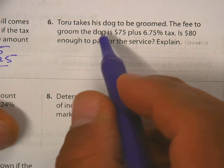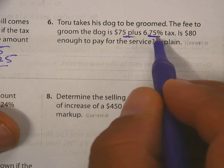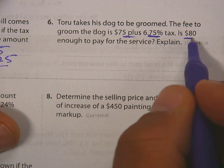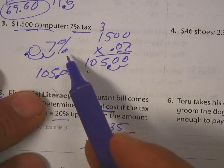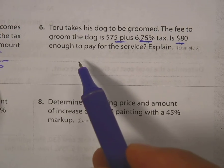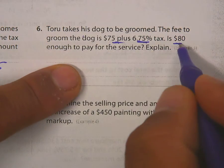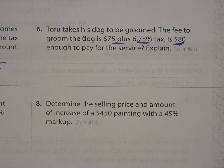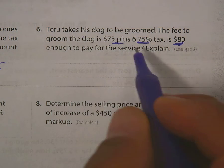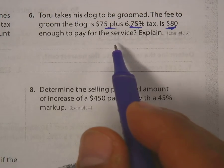Number six: Raul takes his dog to be groomed. The fee to groom the dog is $75 plus tax. Is $80 enough? Do the same thing you did for number four, except at the end you check if you have enough. If you only have $80, you'll say 'yes, he has enough' with some left over, or 'no, he needs more.'